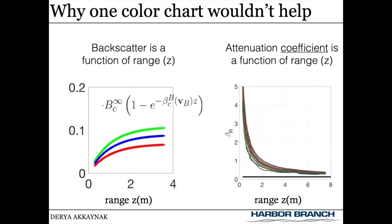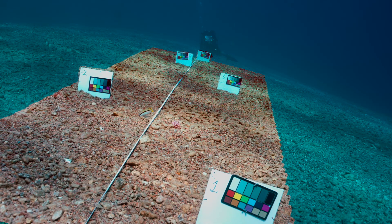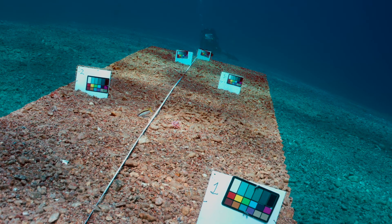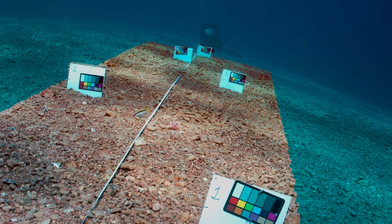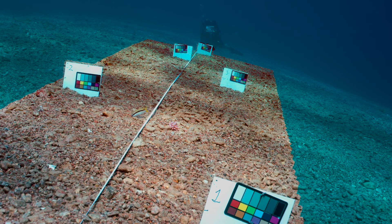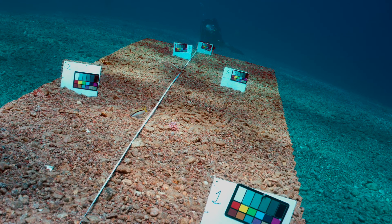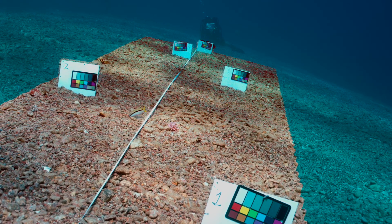The old atmospheric image formation model assumed the attenuation and the backscatter coefficient to be the same and to be a constant for the entire scene. Remember how I said one color chart wouldn't help? Backscatter changes with distance, and the attenuation coefficient changes with distance. Unless everything in the scene is at the same range, you would need a minimum of two color charts at two different distances. When we have more than one color chart in the scene, we can easily extract these coefficients and apply them to correct the colors in the image. But in real life, we don't have color charts in the scene — and that's where See-Through comes in.